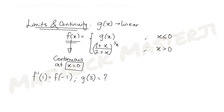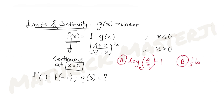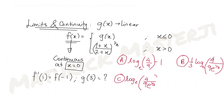The question asks us to find the value of g(3). The answer choices are: log base e of (4/9) minus 1; (1/3) log base e of (4/9) times e raised to 1/3; and (1/3) log base e of (4/9) plus 1. We have to figure out which answer choice is correct.